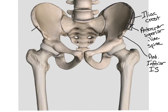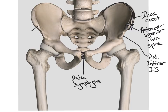Moving down to the middle, the small area that connects the two sides is our pubic symphysis. Remember, this is a joint made up of cartilage, much like the costal cartilage in the ribs. The small bony prominence on either side of that is called our pubic tubercle, and the section of the pelvis above it is called the superior pubic ramus.